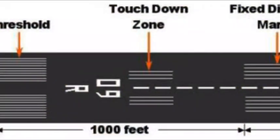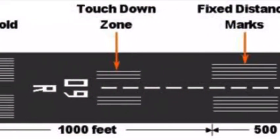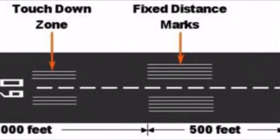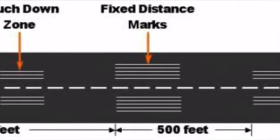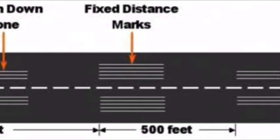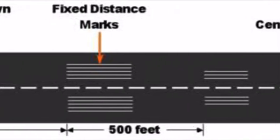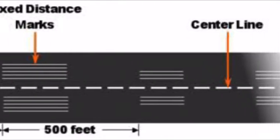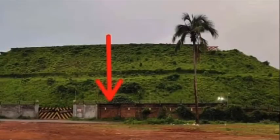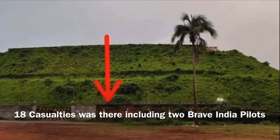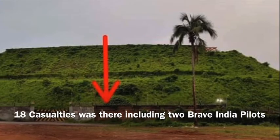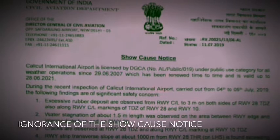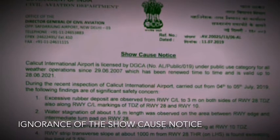The third reason is that the landing approach away from the touchdown zone resulted in shortening of the runway, and the plane could not stop at the end and fell down into a 32-feet deep ditch.